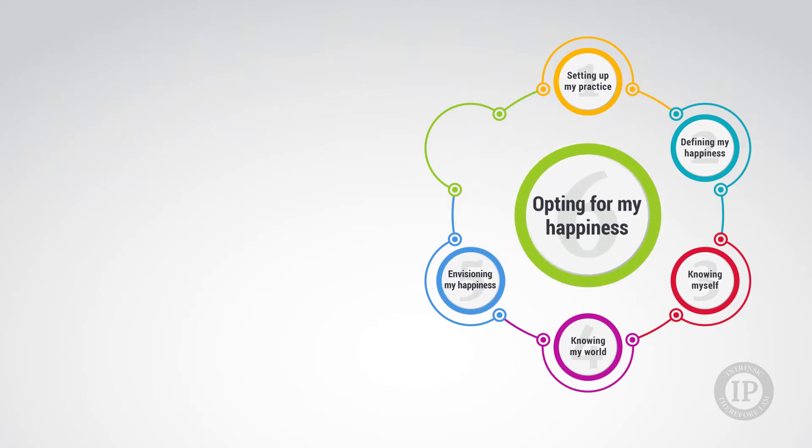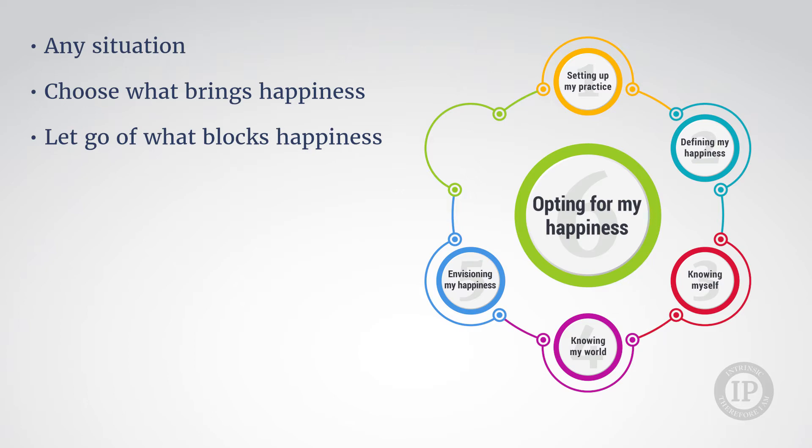The sixth step, entitled Opting for my happiness, is where you can learn in any situation to choose what brings happiness to you in this situation and let go of what blocks happiness to you in that same situation.